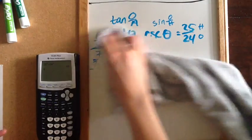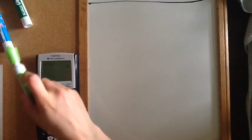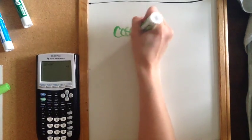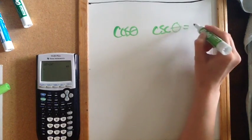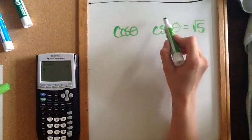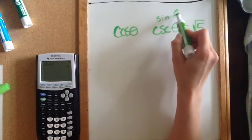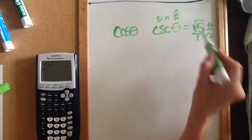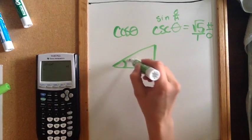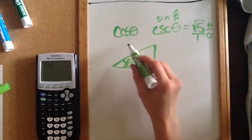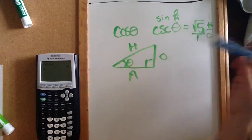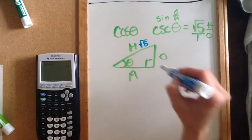Let's try another example. I want the cosine of theta, and I have the cosecant of theta is √5. The cosecant is the reciprocal of sine — sine is opposite over hypotenuse, which means cosecant is hypotenuse over opposite. This is really √5 over 1, because there's nothing underneath. I draw my triangle, label one angle that's not the right angle as theta, and label the sides: hypotenuse, opposite, and adjacent. The hypotenuse is √5 and the opposite is 1.